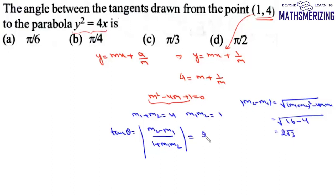So tan theta will be 2 root 3 upon 2 which is simply root 3. So in this case value of theta simply will be pi by 3 and that's your option number C.